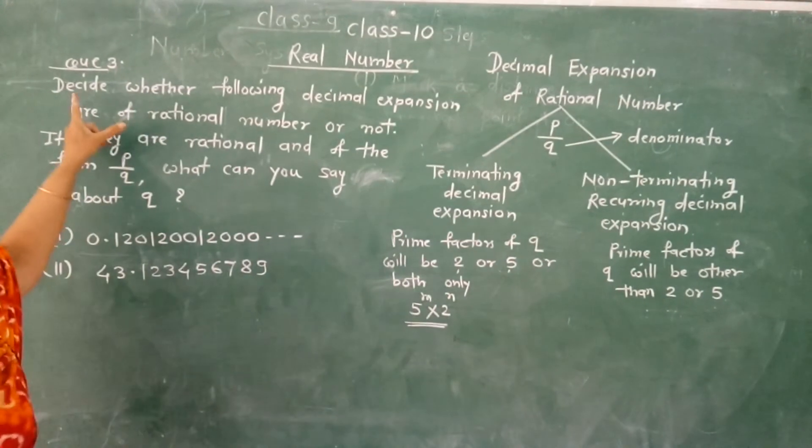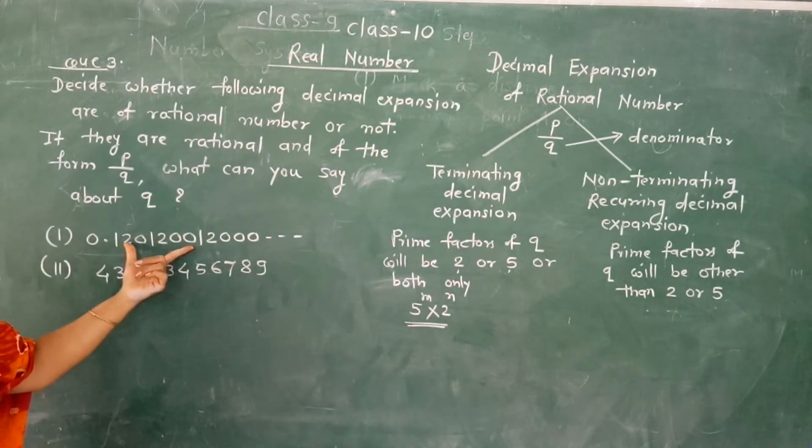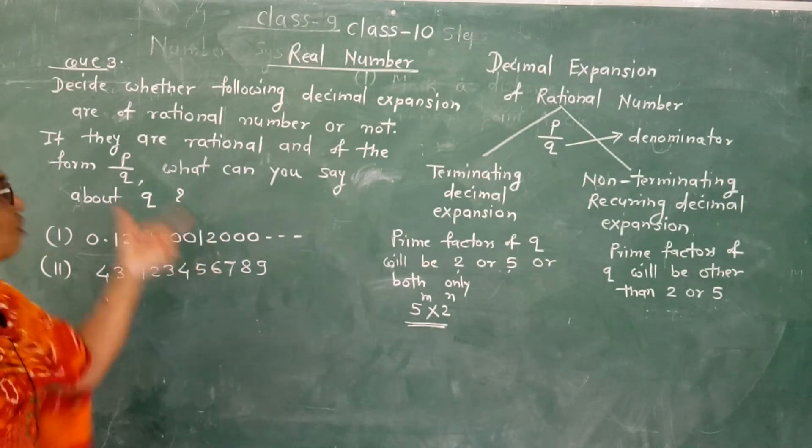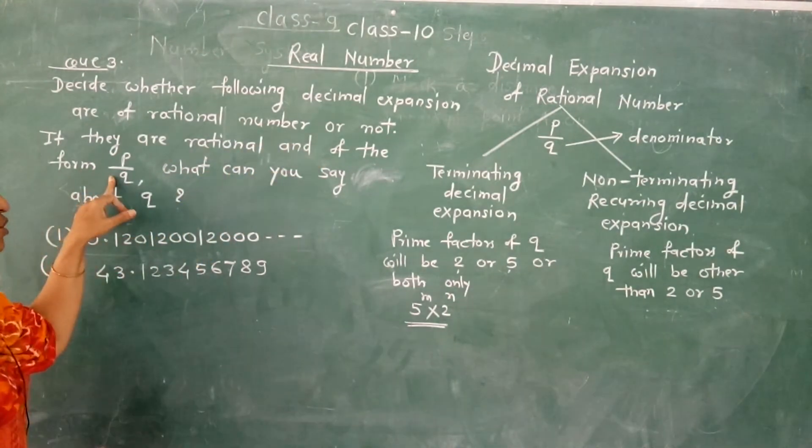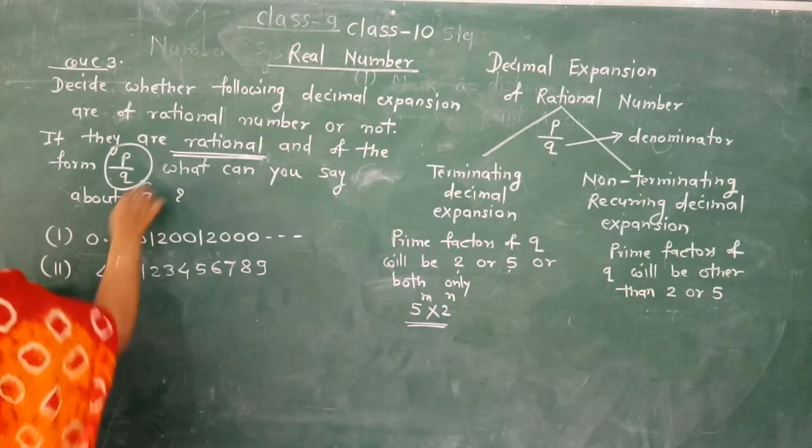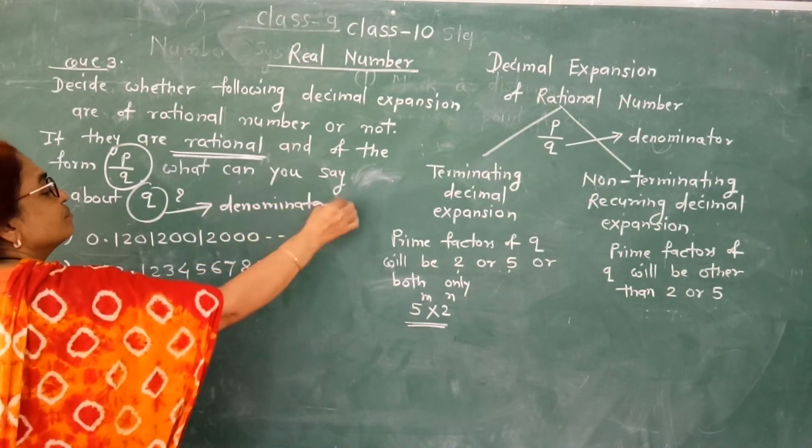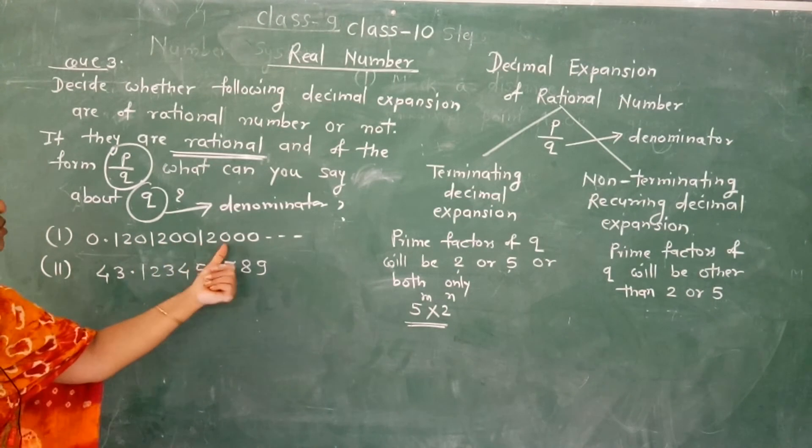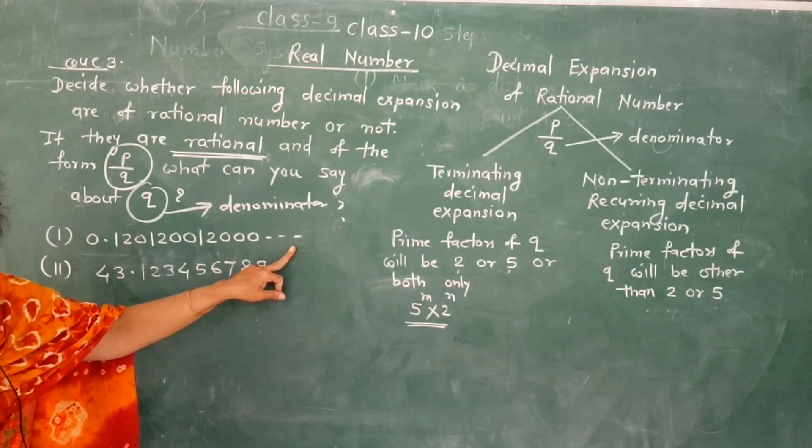Question number 3: Decide whether the following decimal expansions are of rational numbers or not. If they are rational and of the form p upon q, then what can you say about q, the denominator? First example: 0.120 1200 12000 and so on.